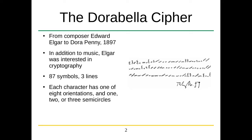The cipher that he sent to Dora Penny in 1897 is composed of 87 symbols and three lines. Each character is basically one to three bumps rotated in eight different directions.